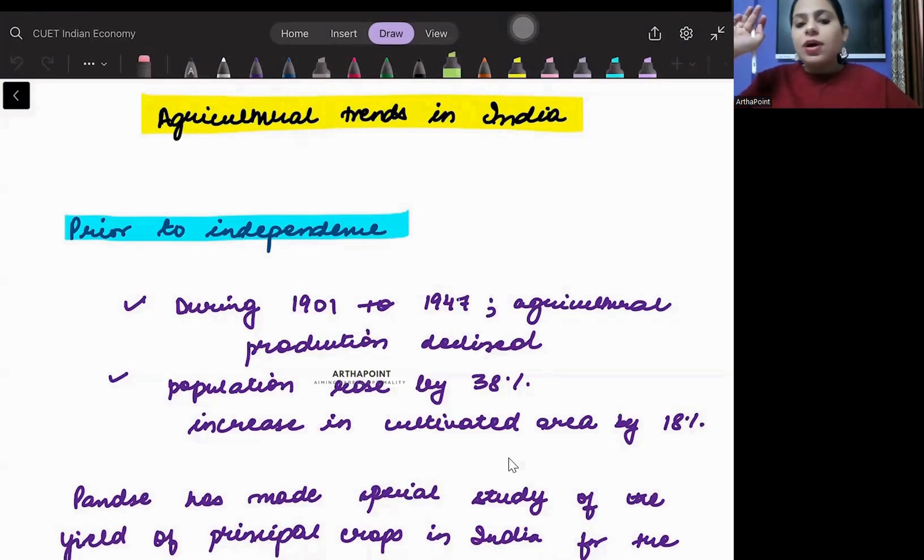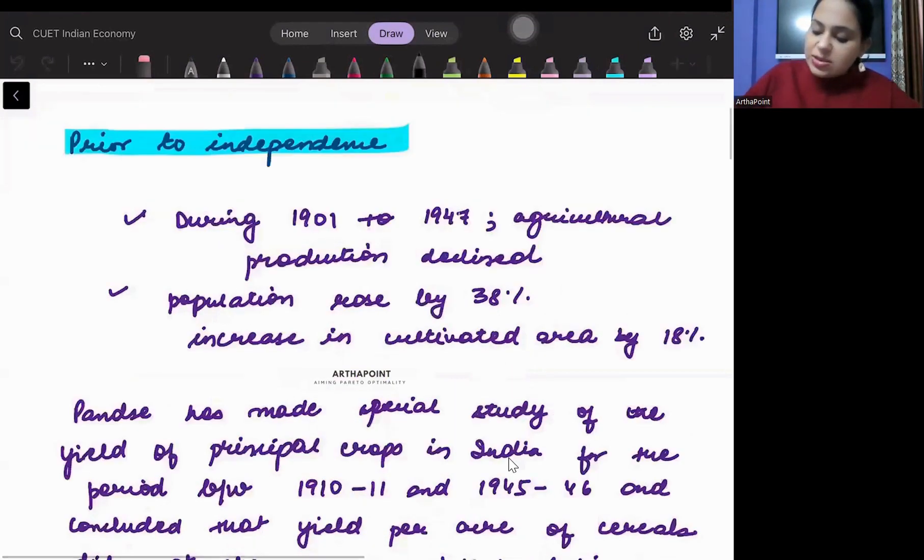When I talk about the period of 1901 to 1947, we see that the agricultural production had declined. So what was the result of independence? The Britishers were not paying a lot of focus on productivity. From a period of 1901 to 1947, agricultural productivity declined.